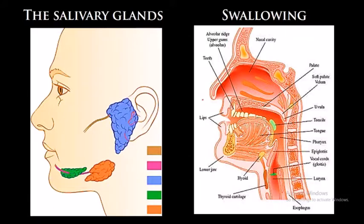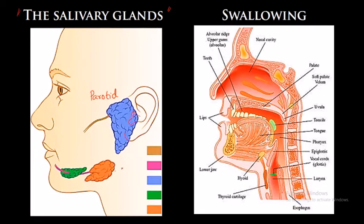Moving on to the salivary glands — in humans we have three pairs of salivary glands. The upper one is called the parotid gland, which is located just in front and beneath the ear. The next is the submandibular gland, and the third is the sublingual gland — 'lingual' relating to the tongue, so sublingual means below the tongue. So the three pairs are: parotid, submandibular, and sublingual.